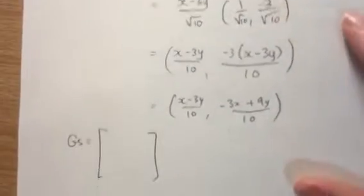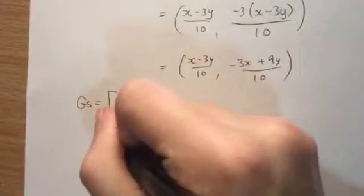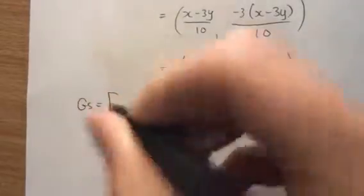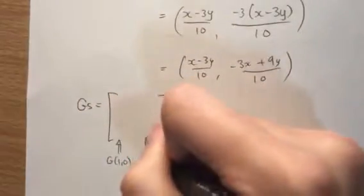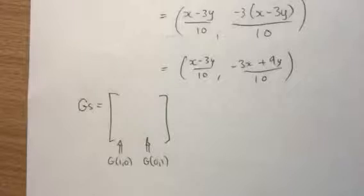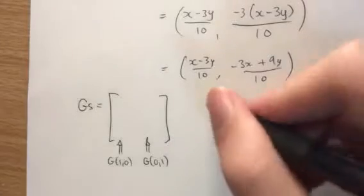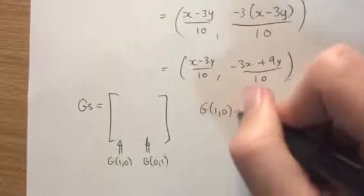But now, we think about our standard matrix as really just G of 1, 0 here and the G of 0, 1 here. It's our standard basis. So what is the G of 1, 0?